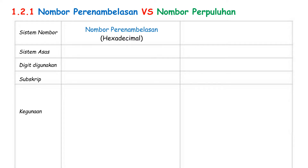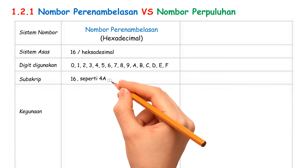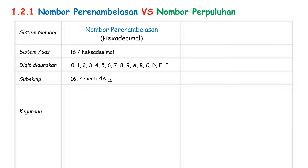Nombor Perenamblasan is System Asas 16, which uses 0 to 9 and A to F. The subscript of Nombor Perenamblasan is 16. For example, Nombor Perenamblasan 4A is written as 4A, and at the right bottom, you need to write down 16 to indicate that this is a Nombor Perenamblasan.